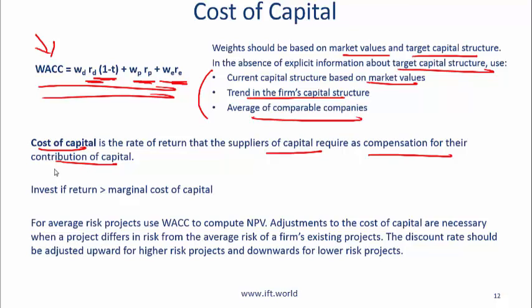When a bank lends money to a company, it requires a certain return. When preferred shareholders give money to a company, they require a certain return. The weighted average cost of capital simply takes a weighted average of all those costs. Connecting this to capital budgeting: if you do a project where the return is 12% and the marginal cost of capital is 10%, you should do the project because your return is higher than the cost.